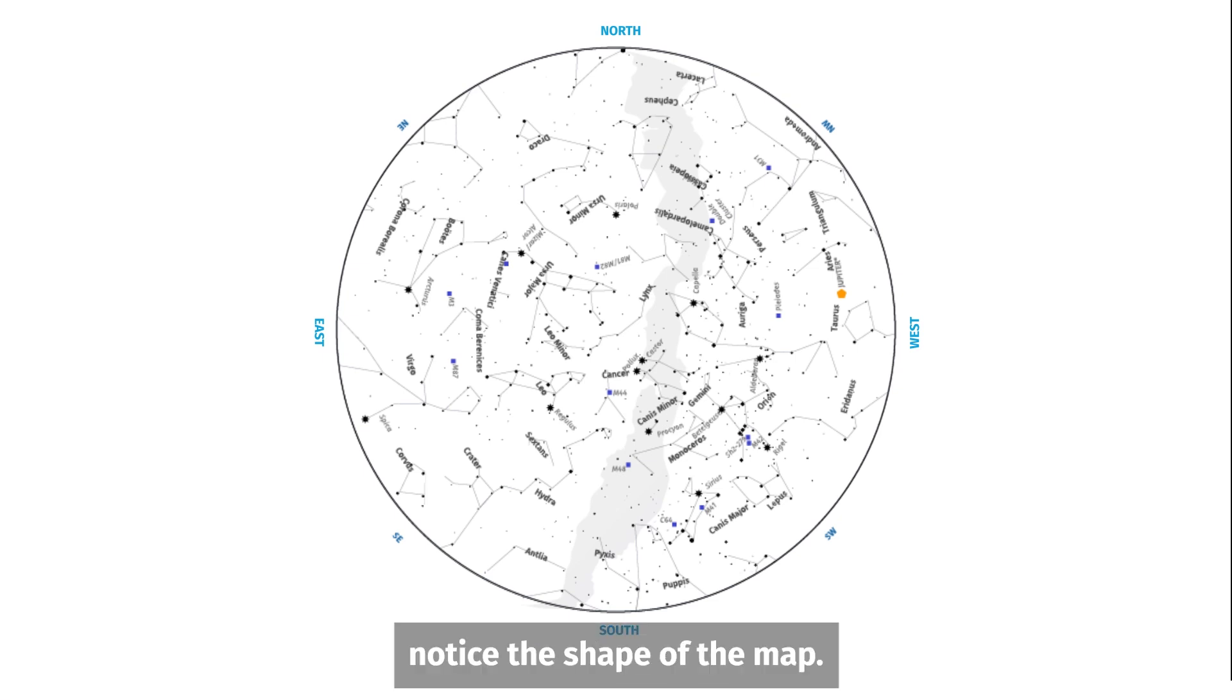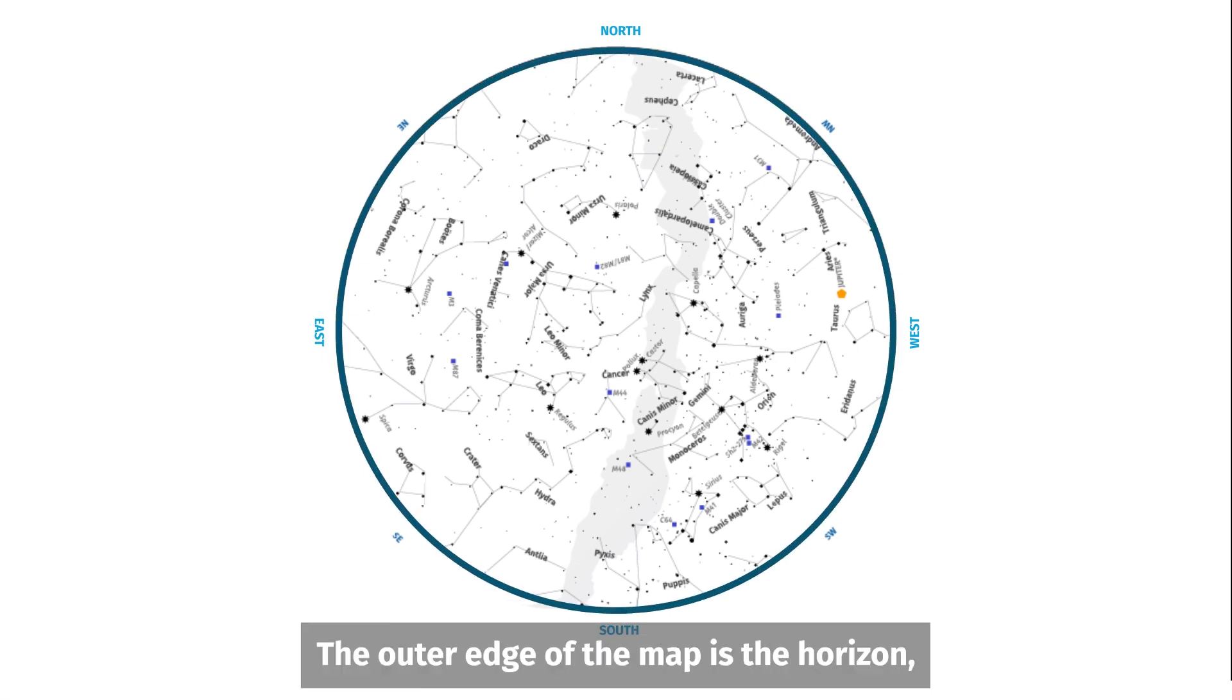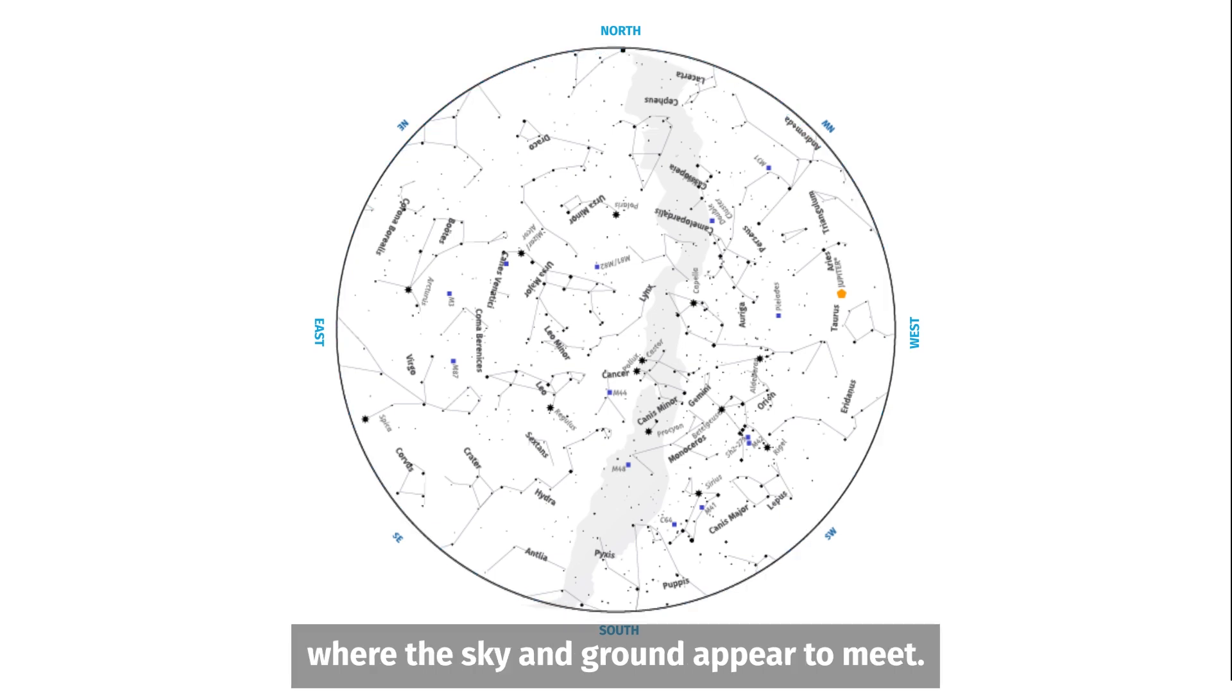Next, notice the shape of the map. The map is a circle. The outer edge of the map is the horizon, where the sky and ground appear to meet. And the center of the map is the zenith, the point directly overhead. You can use these two reference points to know how high in the sky to look for the stars.